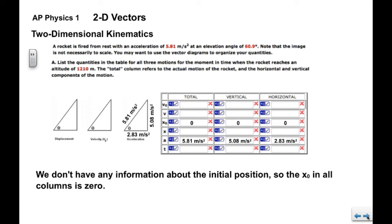Okay, now moving on, we don't have any information about the initial position so we can assume that x naught is zero. This is the origin in other words, this point. So that goes in all three columns.